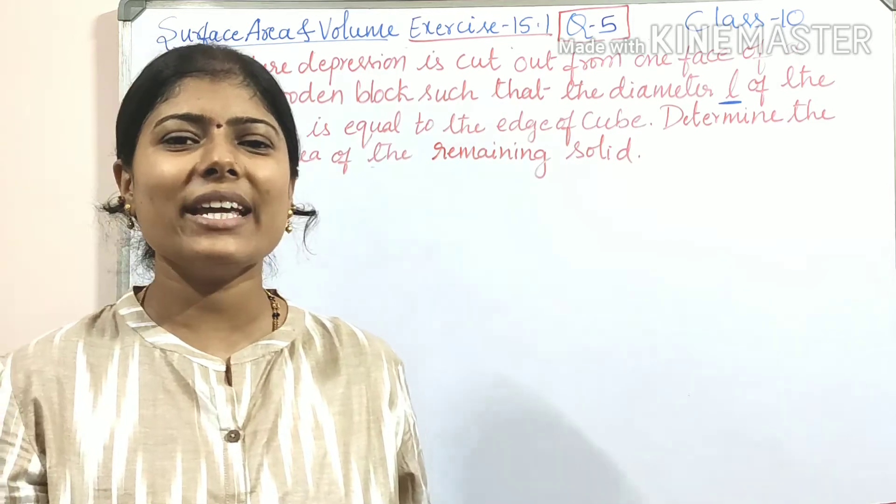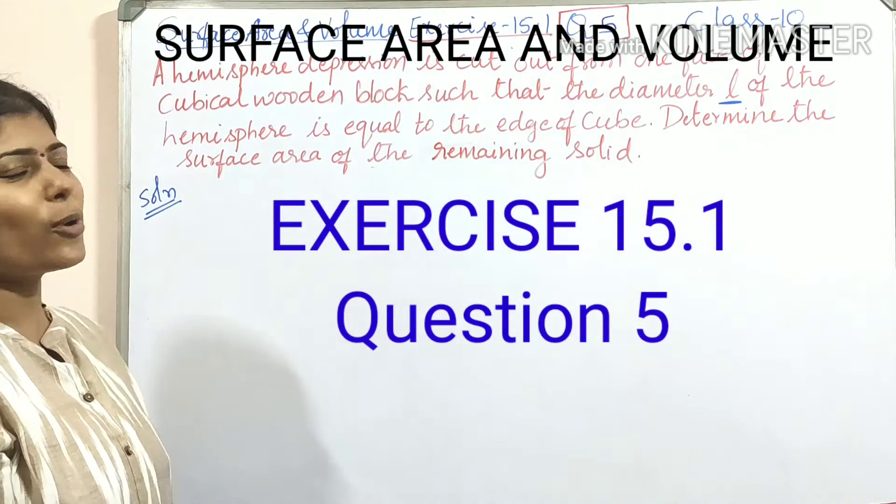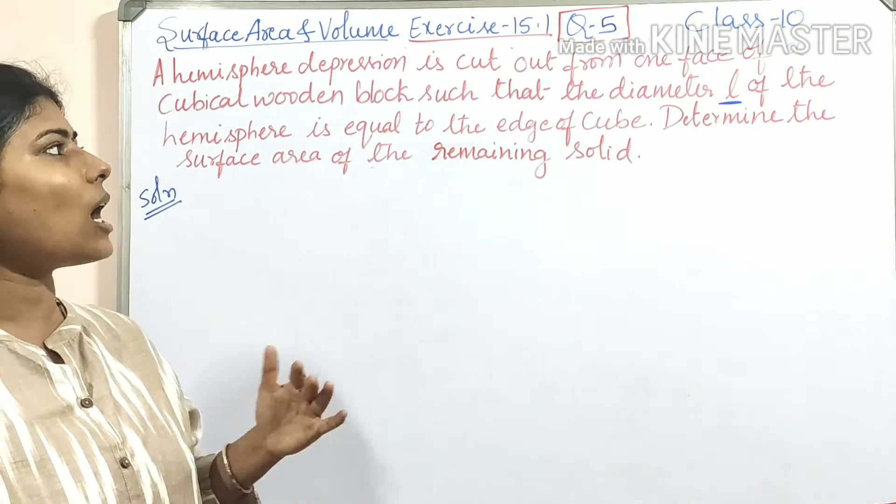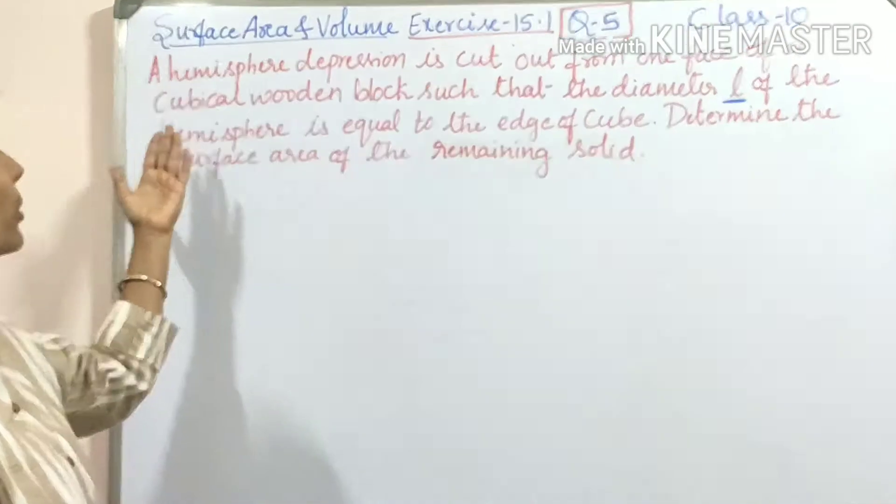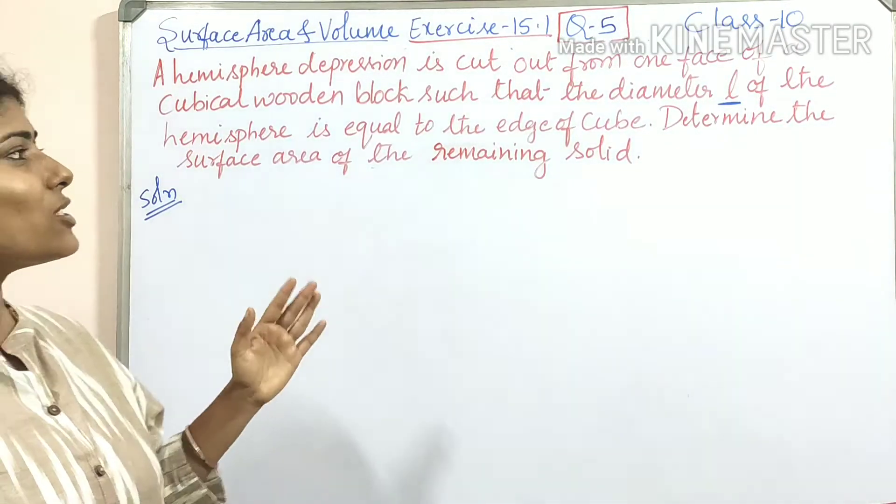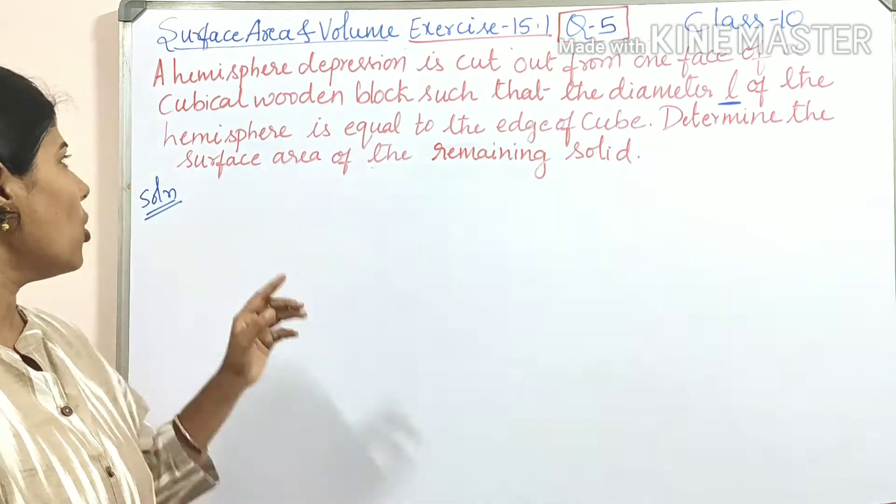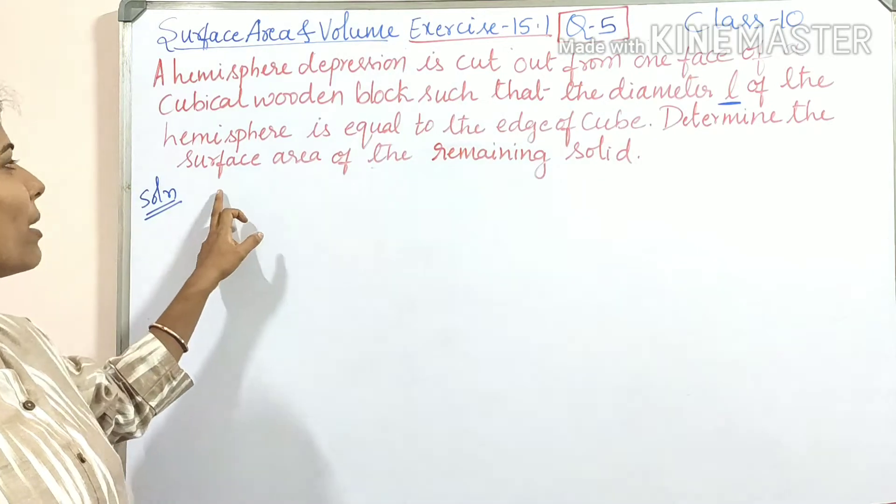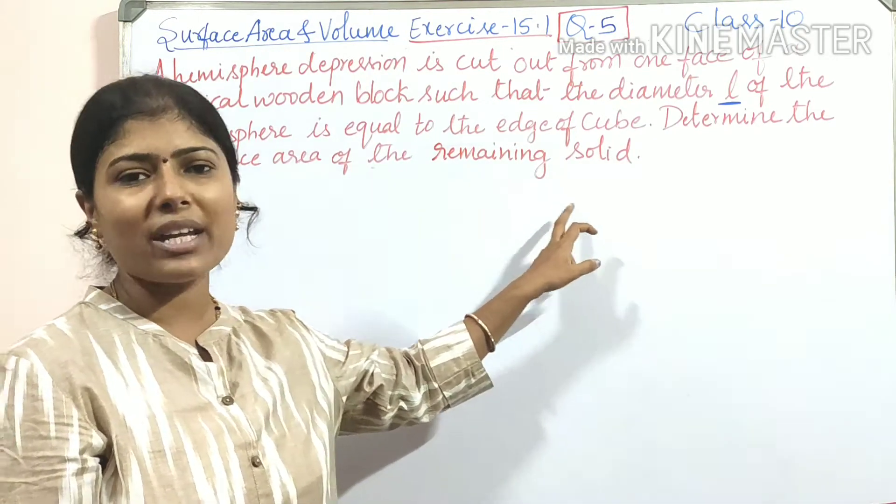Today continuing surface area and volume exercise 15.1 question number 5. A hemisphere depression is cut out from one face of a cubical wooden block such that the diameter L of the hemisphere is equal to the edge of the cube.